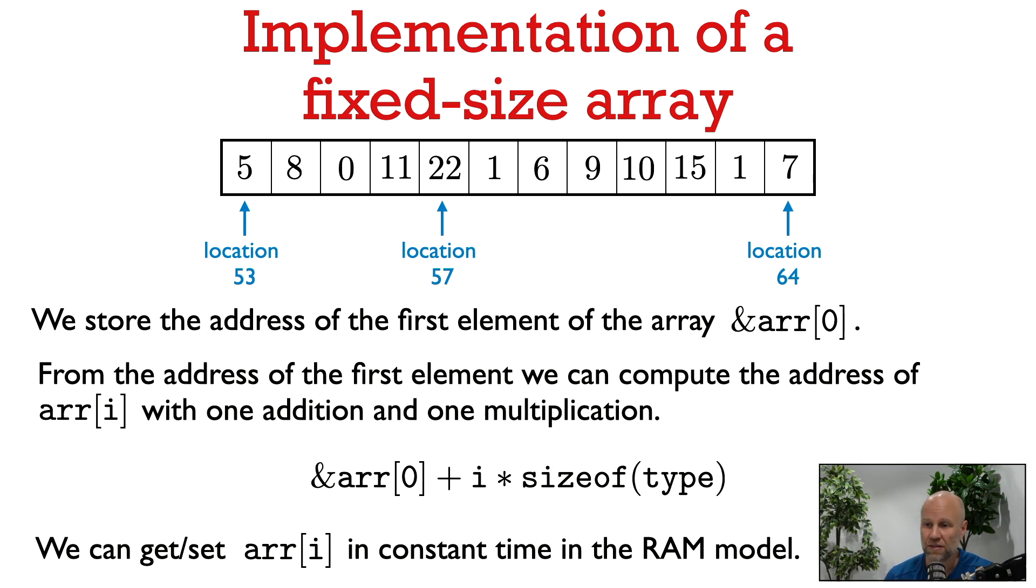So say that size of type here is the number of words taken up by the type of the elements in the array. Again, for simplicity, just assume that this is 1. Then the address of the ith item in the array is simply the address of the first item plus i times the size of the type being stored. By rule number 3, in constant time, we can perform this addition and multiplication to compute the address of the ith element. Then by rule 1, we can read or write to this address in constant time as well. So this shows how we can implement get and set in constant time.